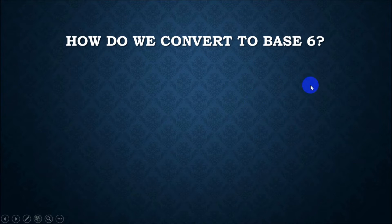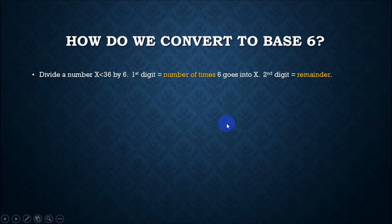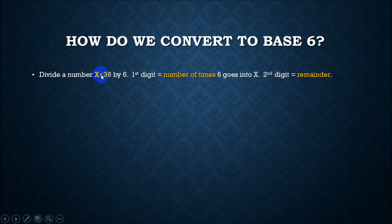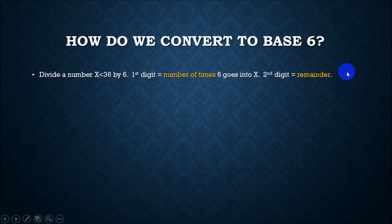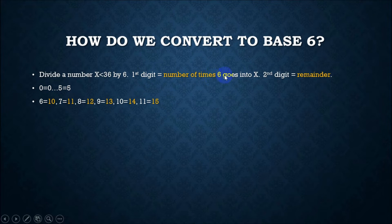So I'm going to give you a crash course in converting to base 6. Take a number less than 36, because when you get to 36, that's 6 squared, and you're going to have a 3-digit outcome. The first digit is the number of times 6 goes into that number, and the second digit is your remainder. You're only going to be seeing numbers 0 through 5 — you're never going to see a 6, 7, 8, or 9 in the tens of minutes on a clock. It can only be 0 through 5.